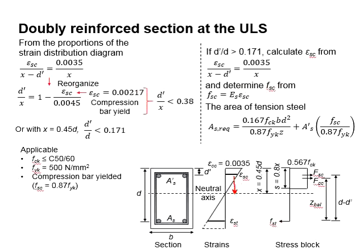This height here is determined by minusing the x with d prime. Reorganize the equations, we obtain this equation. For the compressive steel bar to undergo yielding, it will undergo a strain of 0.00217.